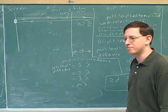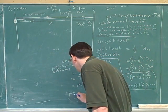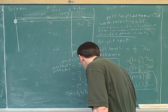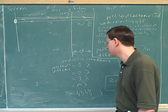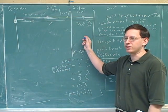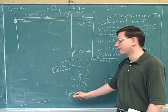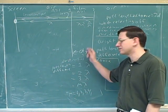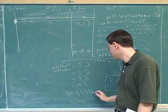They would say the path length difference is m times lambda. And what can m be? Notice that in this case, it doesn't make sense for m to be zero. The path length difference can't be zero, because then there wouldn't really be a film. So you always have to think about whether m could be zero or not. But here, there can't be a zero path length difference, because then the film wouldn't exist at all.